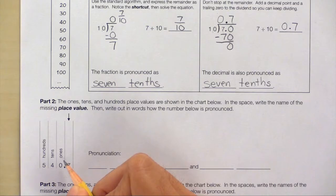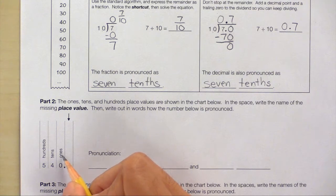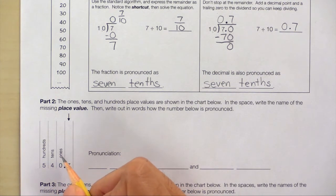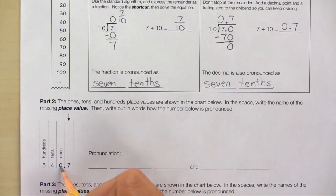Let's move on to part 2. This place value chart shows the ones, tens, and hundreds place values. And we need to find the name of this missing place value. And I know this part of the number is pronounced 540. But how do you pronounce 0.7?